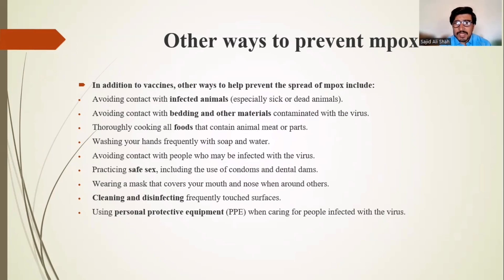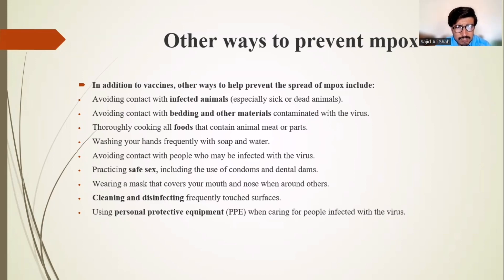In addition to vaccines, other ways to prevent the spread of mpox include: avoiding contact with infected animals; avoiding contact with bedding and other materials contaminated with the virus; thoroughly cooking all food containing animal meat or parts; washing hands frequently with soap and water or using sanitizer; avoiding contact with people who may be infected; practicing safe sex including use of condoms and dental dams; wearing a mask covering your mouth and nose when around others; cleaning and disinfecting frequently touched surfaces; and using personal protective equipment when caring for infected people.